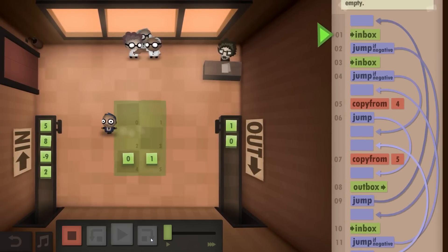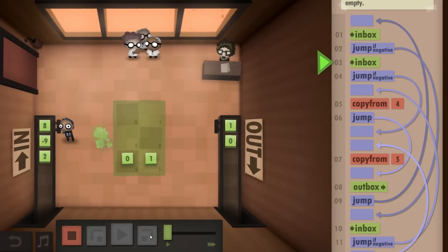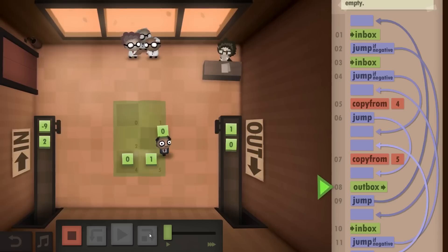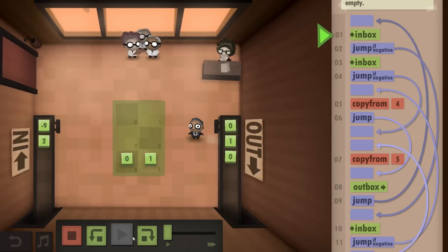And then again, 5 is a positive. 8 is a positive. So we copy from 4 for the same sign. And Outbox to the 0. And so on.